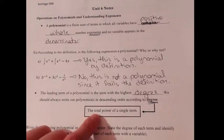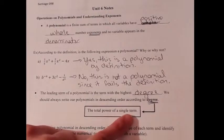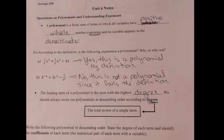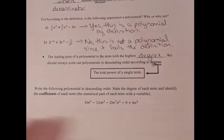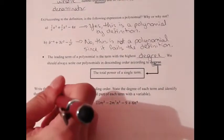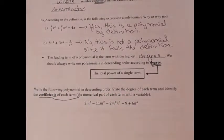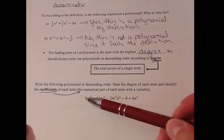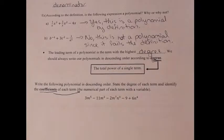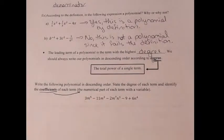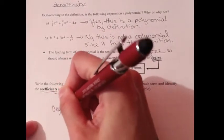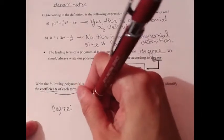We're going to analyze each term individually and decide what their degrees are. Write the following polynomial in descending order from biggest to smallest, state the degree of each term, and identify the coefficients. Our first term is 3m to the fifth — the degree of a term is the same as the total power of a single term — so the degree of my first term is five.